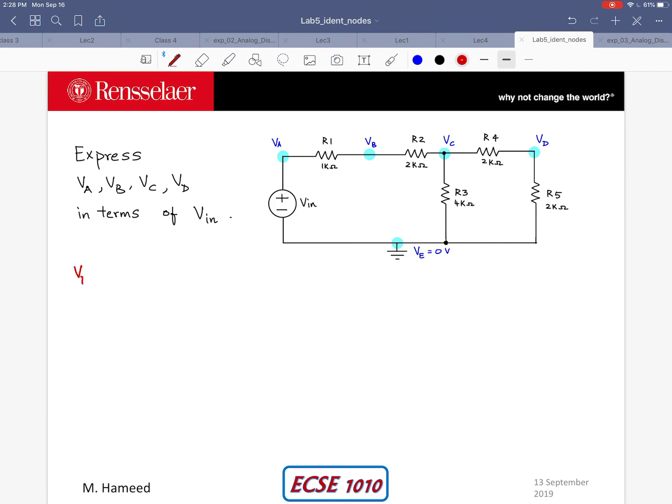VD is going to equal VC multiplied by R5 divided by R4 plus R5. Simple voltage divider. In this example we are given both these resistors R4 and R5 as two kilo ohms so this should work out to be VC divided by two. So that's our first result.